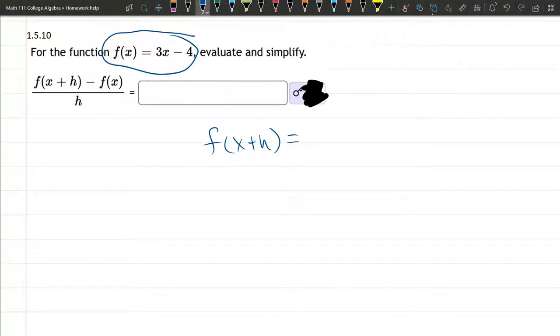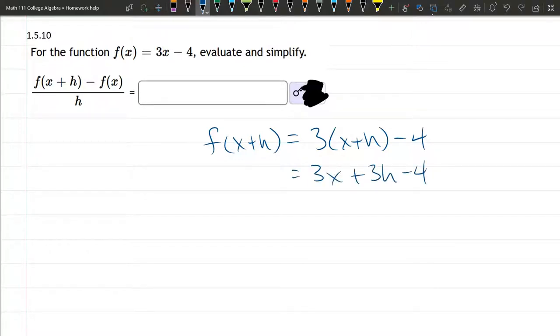Now our function is 3x minus 4, so the input is x plus h. Okay, this is f of x plus h. You can definitely distribute the 3: 3x plus 3h minus 4.